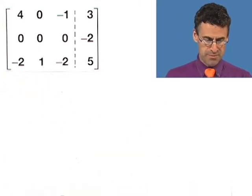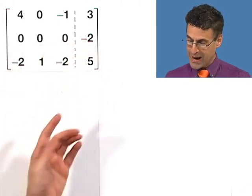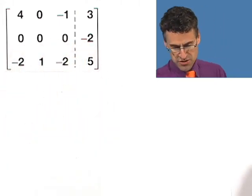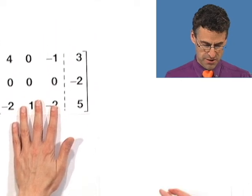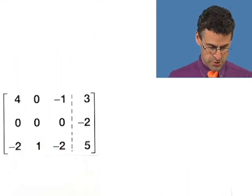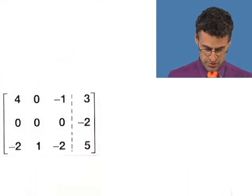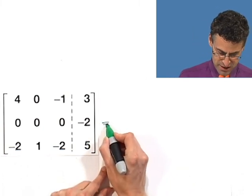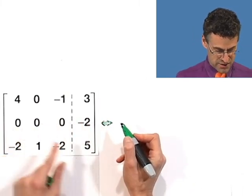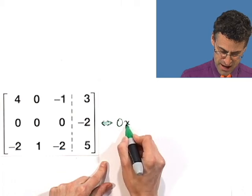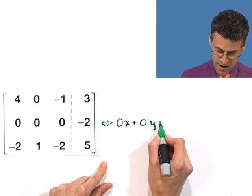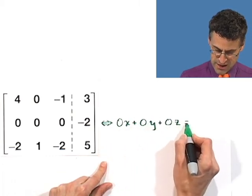There's something we can actually conclude immediately if we look at that second row and translate it into what it means in terms of its corresponding equation. I'm thinking of this as being the x, the y, and the z as always. And so this row corresponds to 0x plus 0y plus 0z equals negative 2.